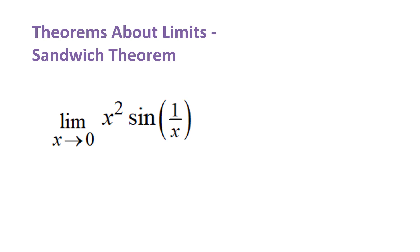To start with, we're going to look at an example of a function where sandwich theorem would be an appropriate theorem to use, and we're first going to talk about why we need another theorem — why the things we already have won't work for this problem. One of the theorems we have has to do with using substitution as a shortcut. We run into trouble here because we could not substitute x equals 0 into this function — the 1 over x would be undefined. So we can't use the substitution shortcut theorem.